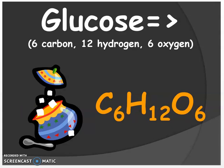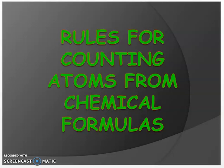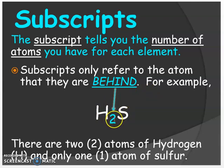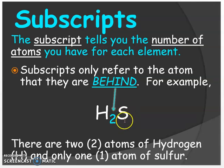So how did I determine this? This is called counting atoms. We're going to go through the three rules of counting atoms for chemical formulas. The first rule is the subscript rule: the subscript tells you the number of atoms you have for each element. Subscripts only refer to the atom they are behind. For example, in H2S, the 2 is behind hydrogen, so there are two hydrogen atoms. There is no number on sulfur — when there is not a number, the symbol itself represents one atom.